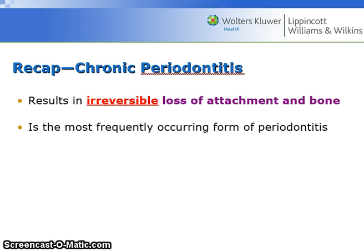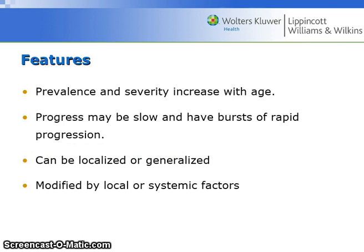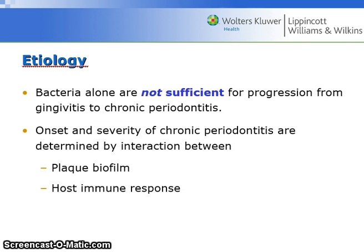Chronic periodontitis results in irreversible loss of attachment and bone. It is the most frequently occurring form of periodontitis. Clinical appearance is not a reliable indicator of presence or severity — it may exhibit pronounced or minimal changes. Features: prevalence and severity increase with age. Progress may be slow with bursts of rapid progression. It can be localized or generalized and modified by local or systemic factors. Bacteria alone are not sufficient for progression from gingivitis to chronic periodontitis; onset and severity are determined by interaction between plaque biofilm and the host immune response.